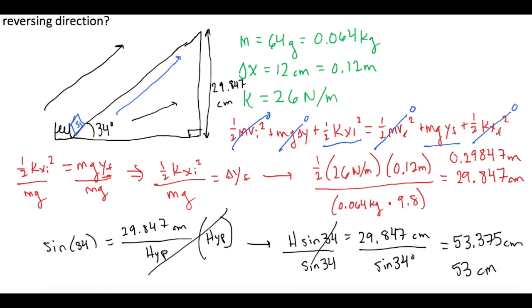So we just figured out, with that spring compressed that far, it's going to shoot that ice cube up 53 centimeters before it stops and then turns back around.